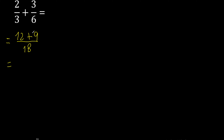21 can be simplified because it can be divided by the same number. Divided by 3: 21 divided by 3 is 7, 18 divided by 3 is 6.